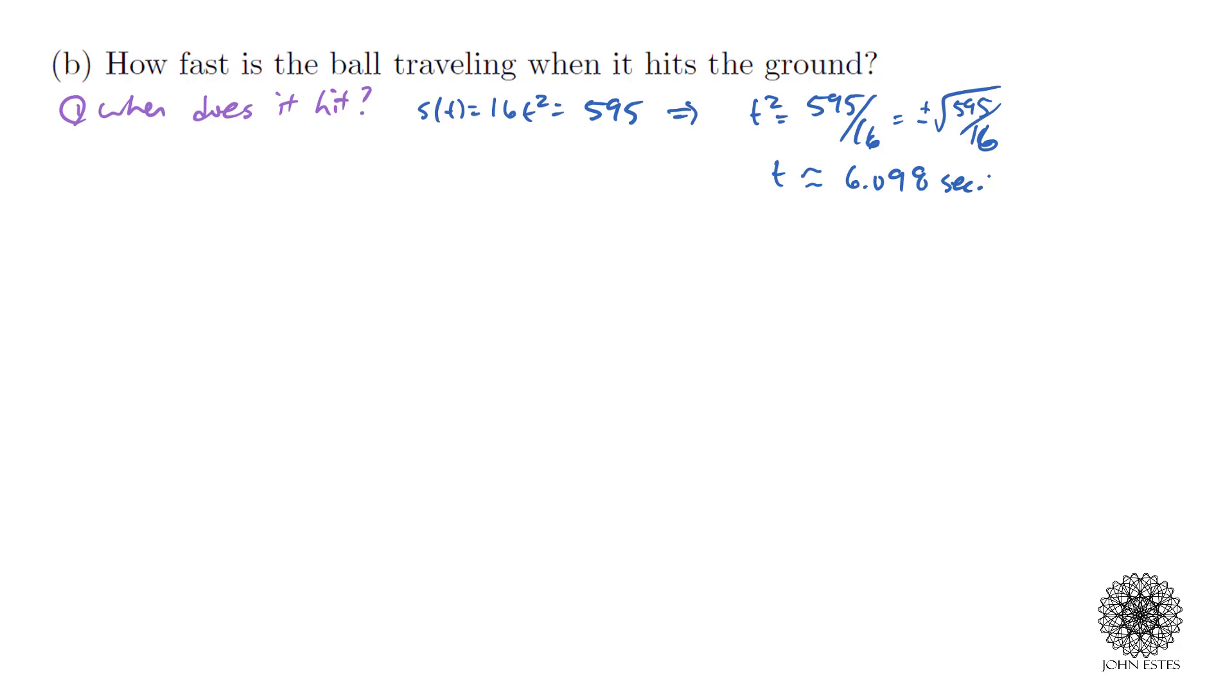What we really need to know is v(t) for this time - how fast was this marble traveling at this time? I've already calculated what my derivative is, so all I need to do is v(6.098), which is 32 times 6.098. If you work out those calculations, you should get around 195.14 feet per second.